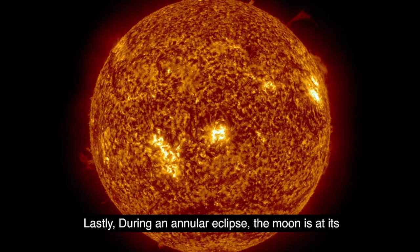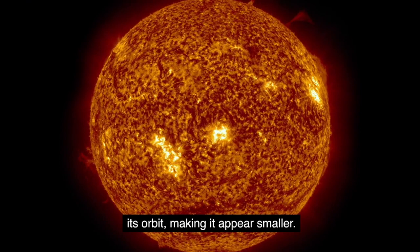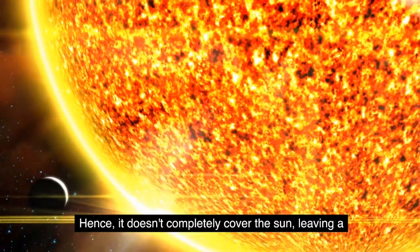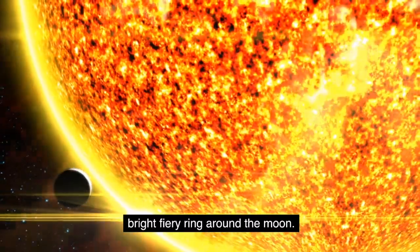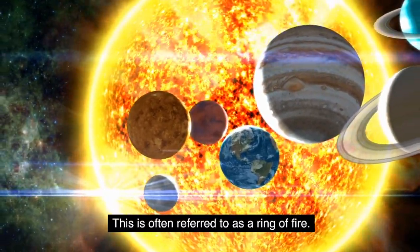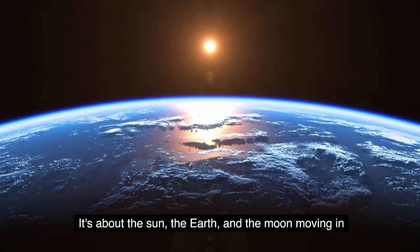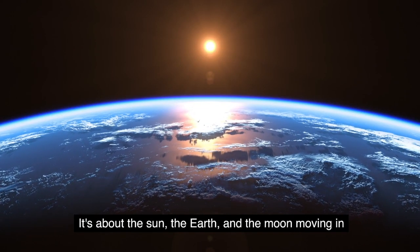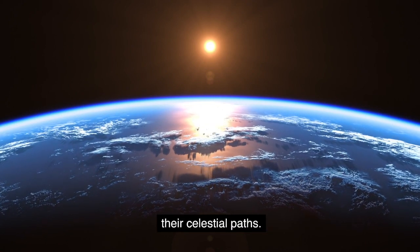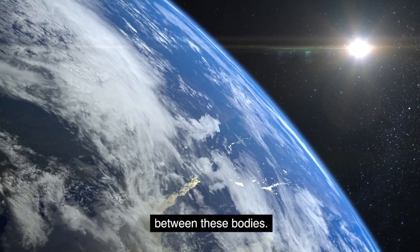Lastly, during an annular eclipse, the moon is at its furthest point from the Earth in its orbit, making it appear smaller. Hence, it doesn't completely cover the sun, leaving a bright, fiery ring around the moon. This is often referred to as a ring of fire. So, the science behind solar eclipses is a dance of cosmic bodies. It's about the sun, the Earth, and the moon moving in their celestial paths. It's about the alignment, the orbits, and the distances between these bodies. So, the alignment of the sun, moon, and Earth creates the captivating event we know as a solar eclipse.